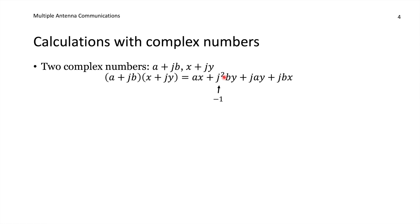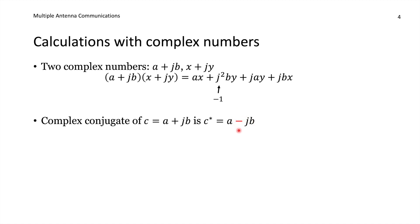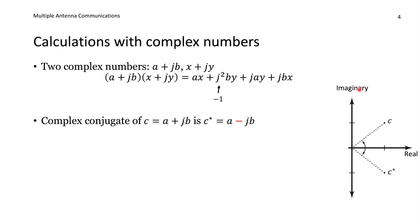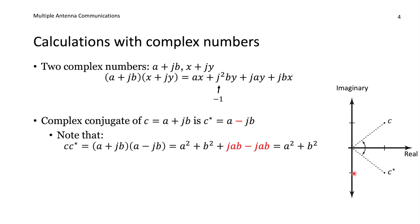When performing calculations with complex numbers, it is common to consider the complex conjugate. If you have a complex number c which is a plus jb, then the conjugate c-star is what we get when we switch the sign of the imaginary part. Geometrically, c-star is what we get when we flip c downward, giving a negative imaginary component along the imaginary axis.